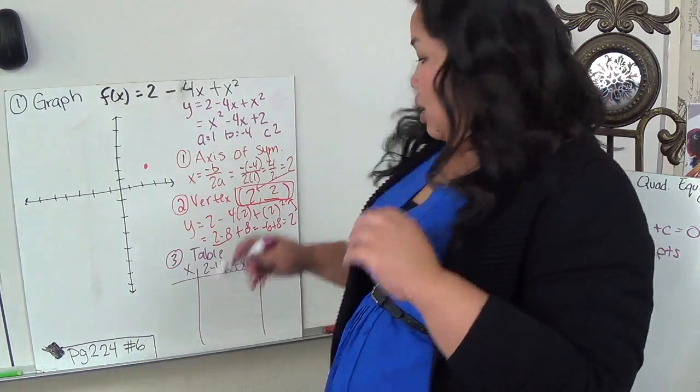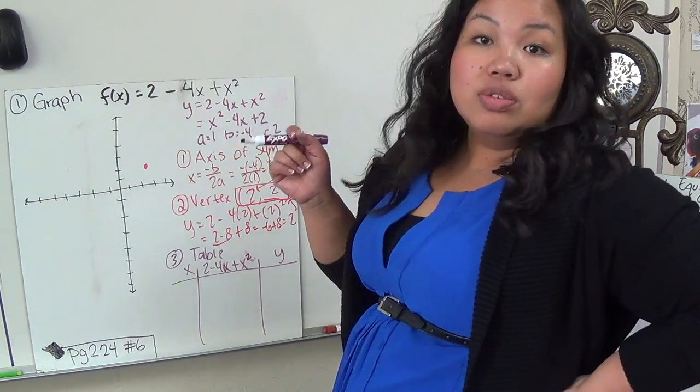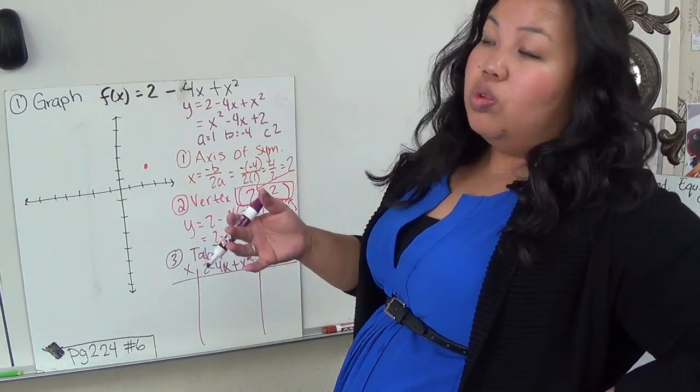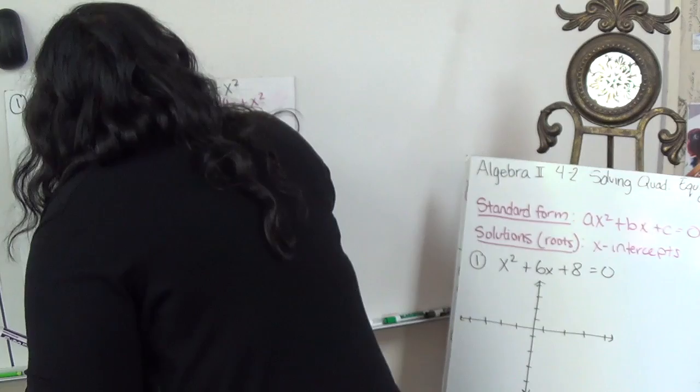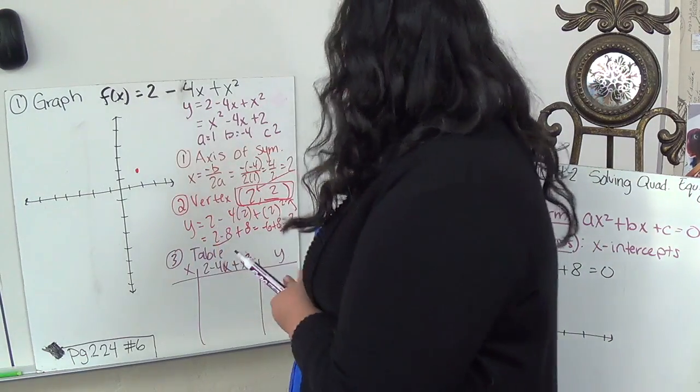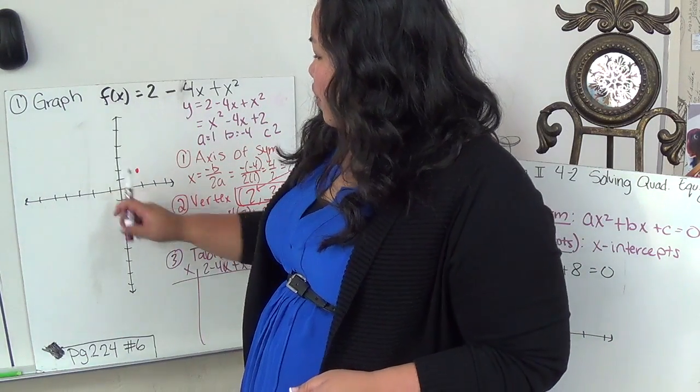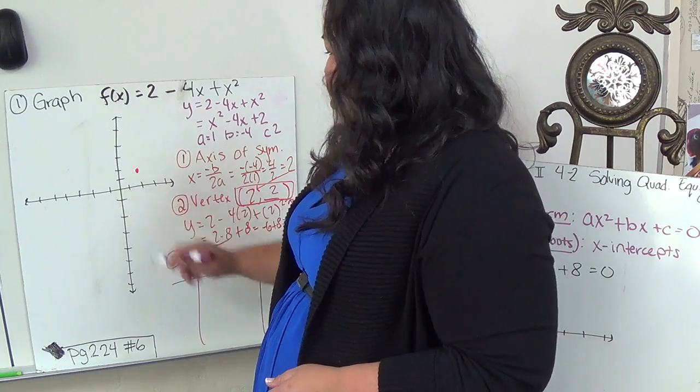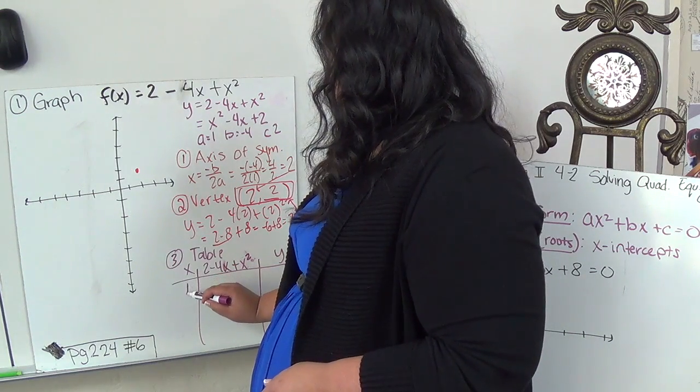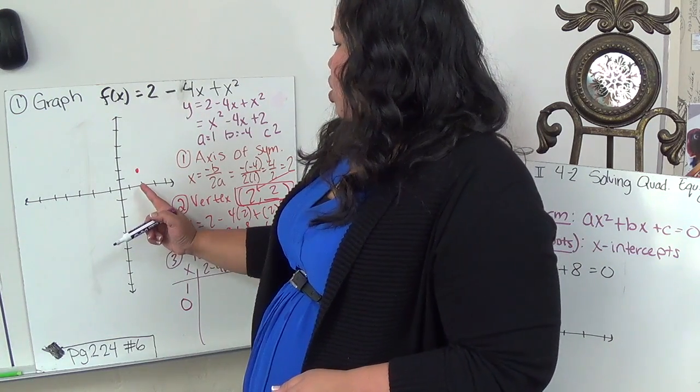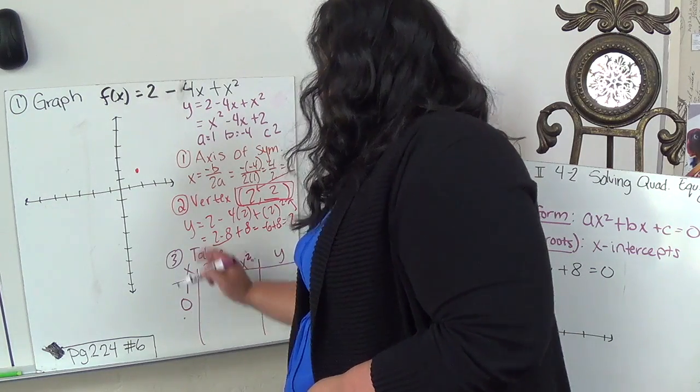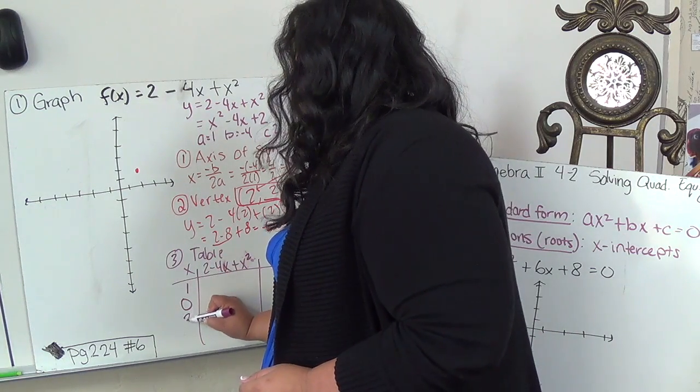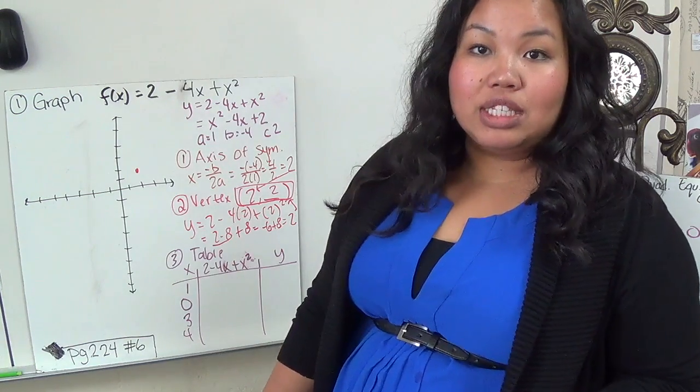Now, unlike the lines, the table, I can't just do negative 2, negative 1, 0, 1, and 2. I have to pick numbers. So here's 2. I'm going to pick two numbers to the left of it. So 1 and 0. And then I'm going to pick two numbers to the right. So 3 and 4. And those are how I choose my x's. I can't just choose any. I find the vertex and then I choose my x's.